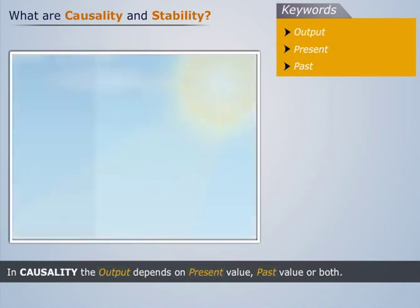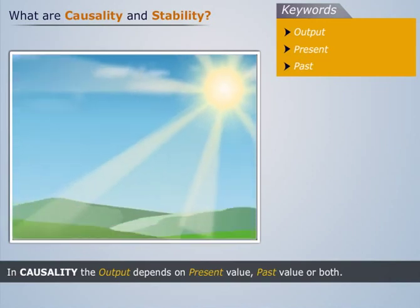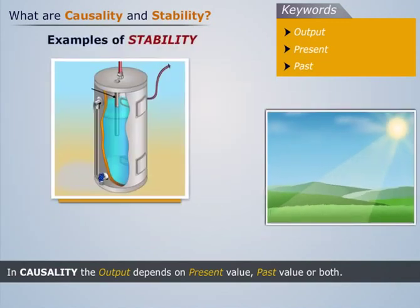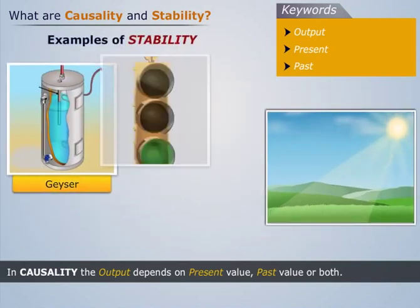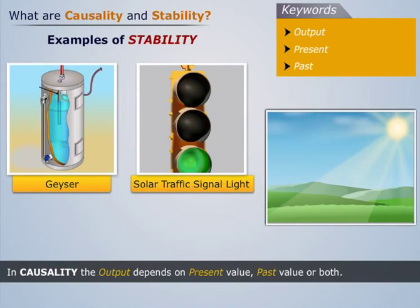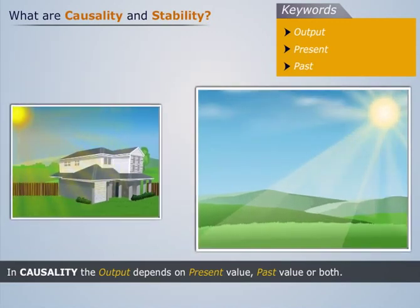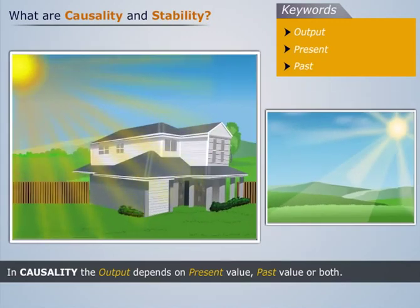Now let us take another example. Sun rays are used in the solar system based equipment we use in our day-to-day life. For example, geysers, solar traffic signal lights. The amount of sunlight we use at home at the first day does not affect our future consumption. That means our present-day usage of sunlight is not going to affect future needs.